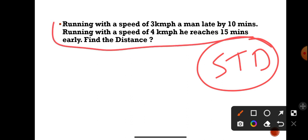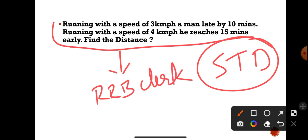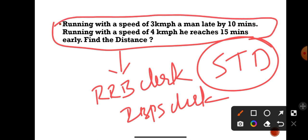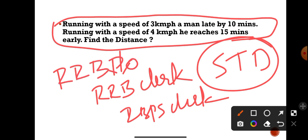This question is from speed, time, and distance. We usually see this type of question especially in RRB Clerk, and sometimes in IBPS Clerk. The same model question will also be seen in RRB PO, but there they will also ask for the actual time along with the distance.